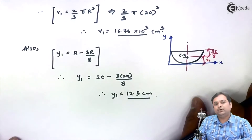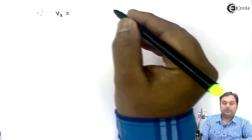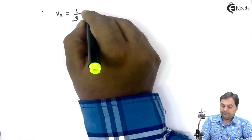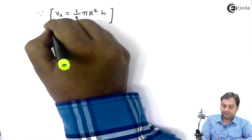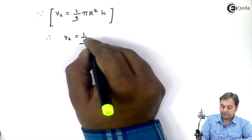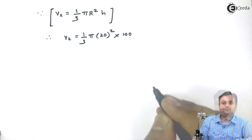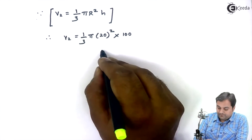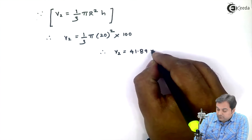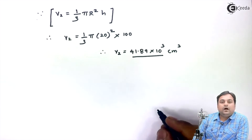After getting V1 and ȳ₁, I will get V2 and ȳ₂. The second solid is the cone, and the volume of a cone is given by (1/3)πr²h. Therefore V2 equals (1/3)π × 20² × 100 centimeter, so V2 comes out to be 41.89 × 10³ centimeter³.